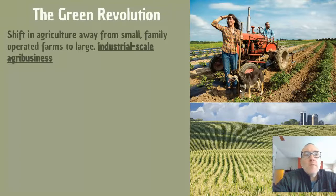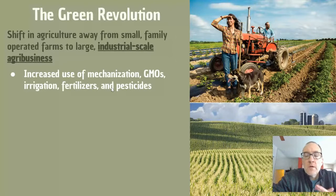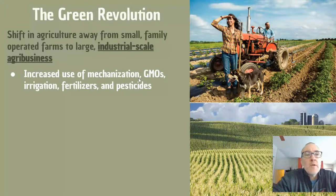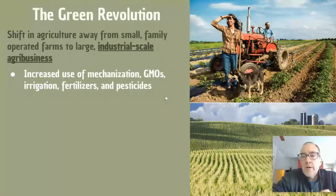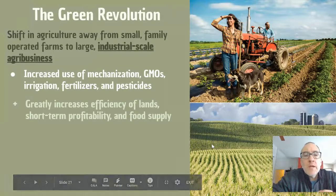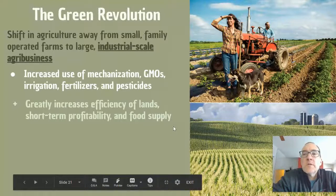So what is the green revolution? It's a shift in agriculture away from small family-operated farms toward large industrialized agro-business. Some of you were able to watch the 'Kiss the Ground' movie and got an idea of what industrialized agriculture means in terms of soils specifically. It includes an increase in mechanization, utilizing more genetically modified organisms, large-scale irrigation, and synthetic fertilizers and pesticide use. It increased the efficiency of land use and short-term profitability — farmers started making more money and obviously increasing the food supply.